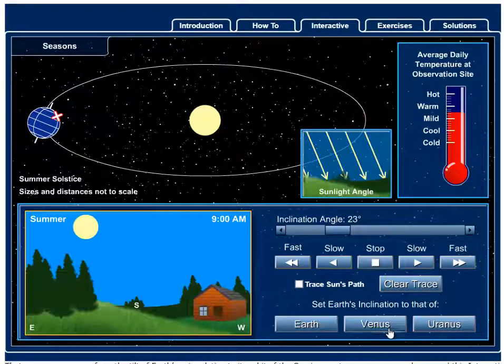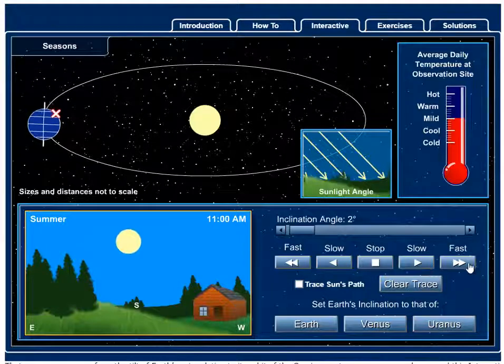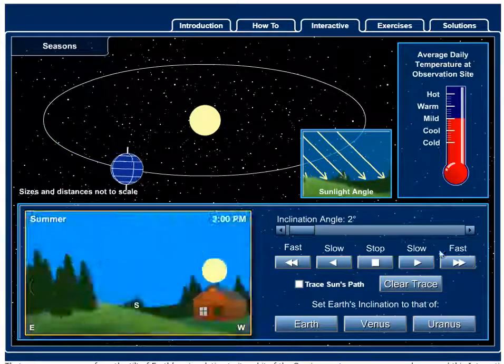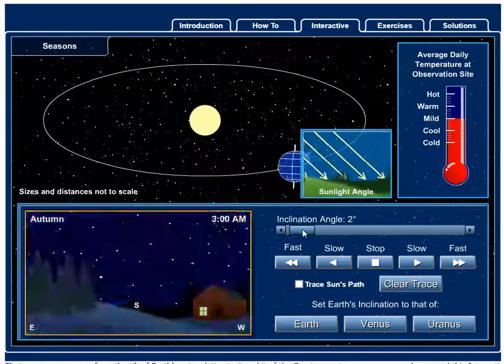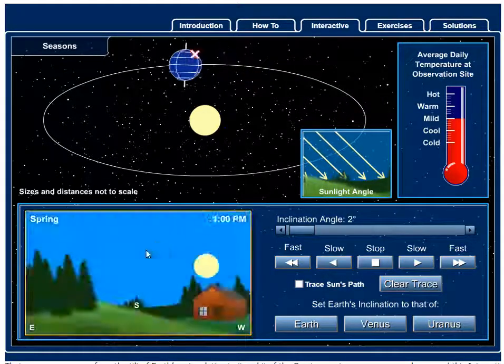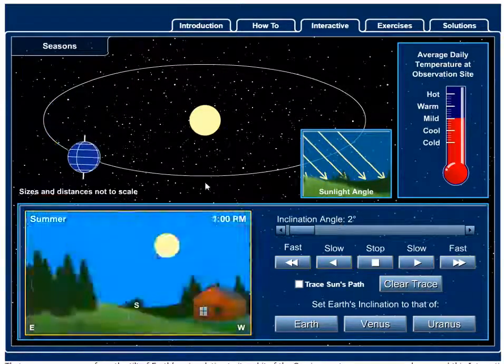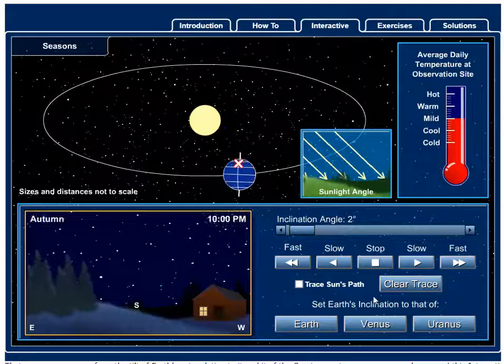What about a different planet? Venus is a little more straight up. So this would basically be the same as what we saw at the beginning. There is a two degree inclination, so there are slight variations in sunlight angle and the height of the Sun in the sky. But really there's not that much of a difference as compared to Earth.